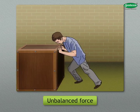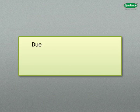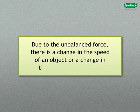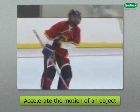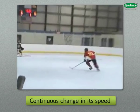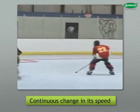But an unbalanced force acting on an object brings it in motion. Due to the unbalanced force, there is a change in the speed of an object or a change in the direction of motion. An unbalanced force is required to accelerate the motion of an object. So as long as the unbalanced force is applied to a body, there is a continuous change in its speed. If the force is removed completely when an object acquires a certain speed, the object will continue moving and then stop after some time.